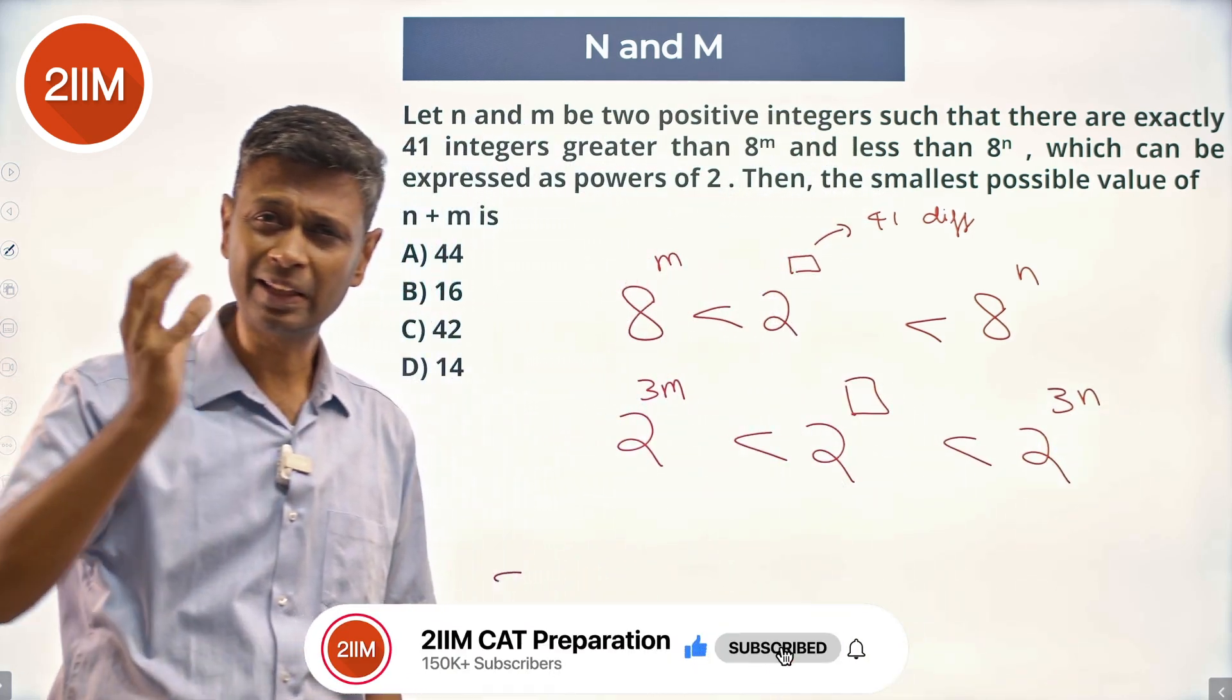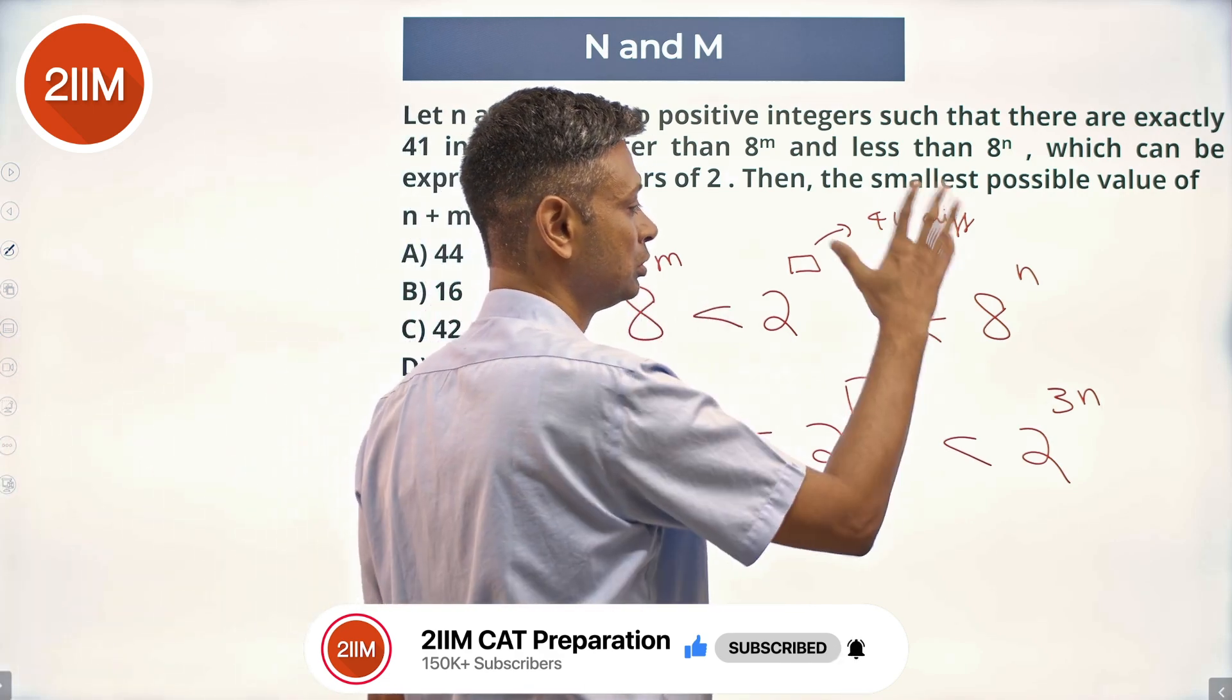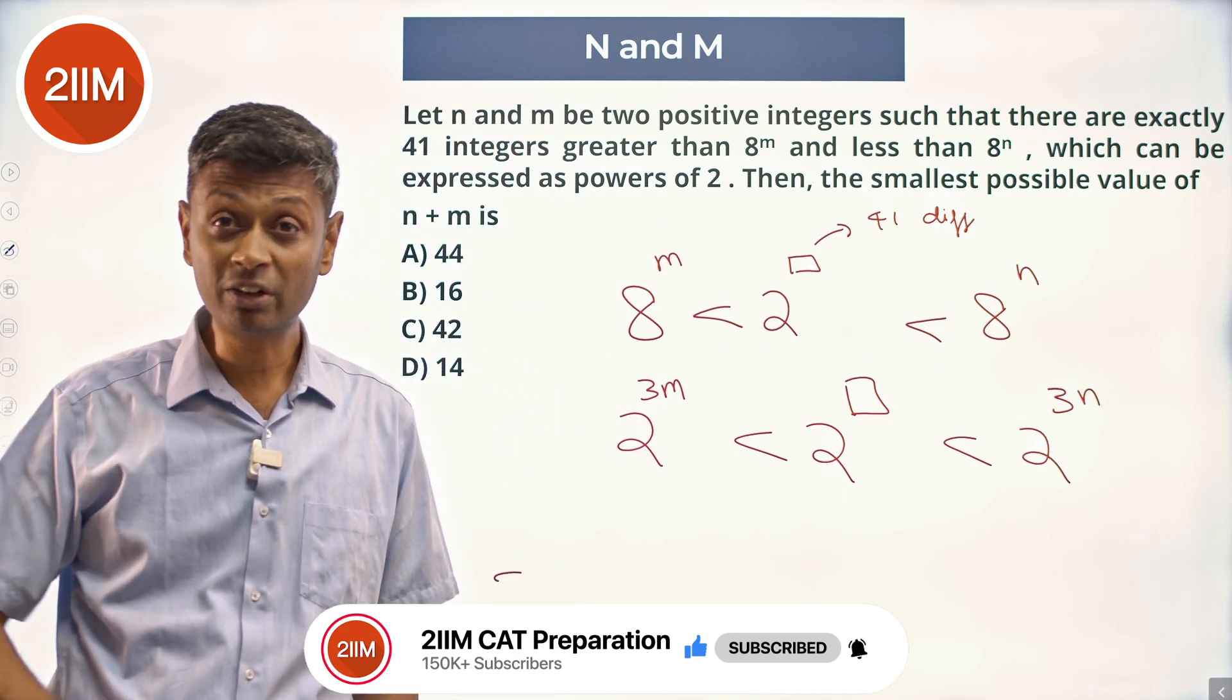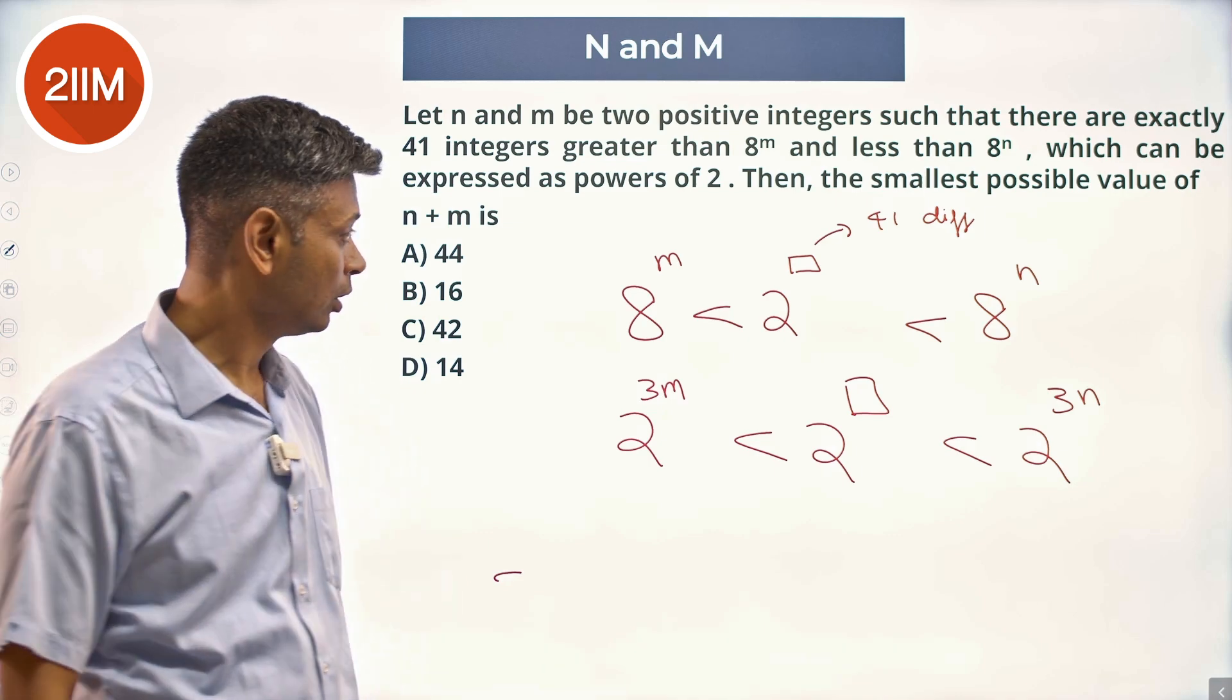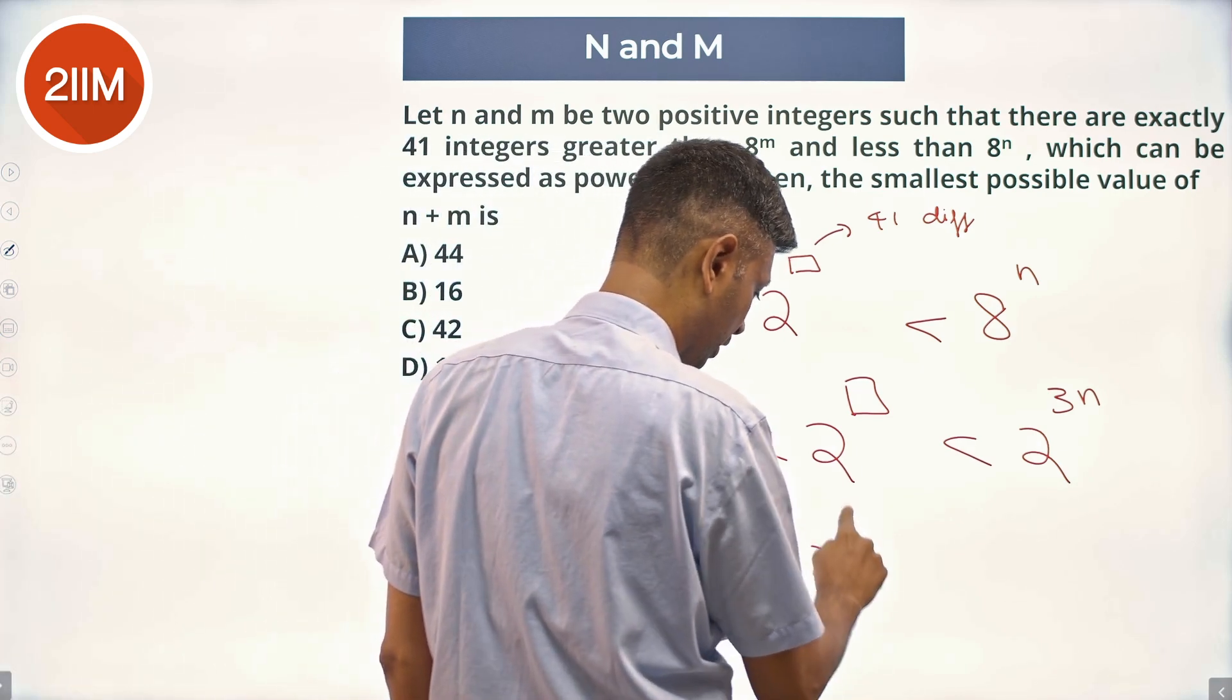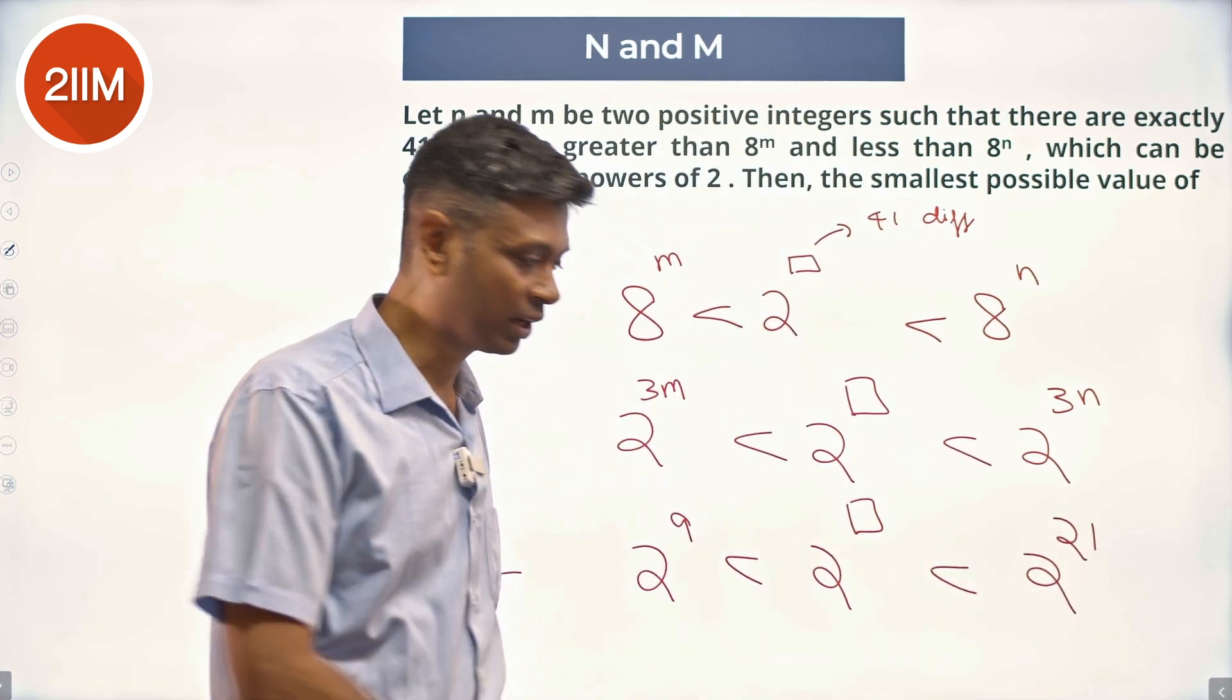So between 3m and 3n, between say 9 and 36, some two values. So 3m and 3n - how many different values can there be? Let's say we're looking at numbers from 2^9, less than 2^something, less than 2^21. How many values can n take?